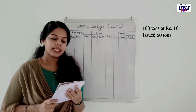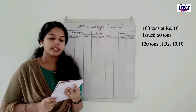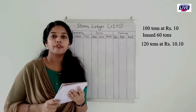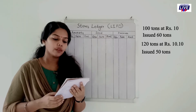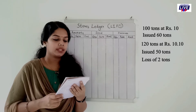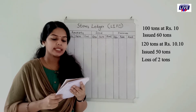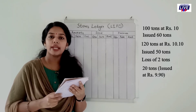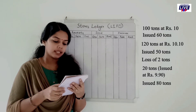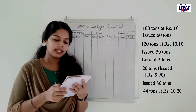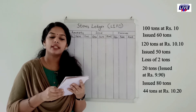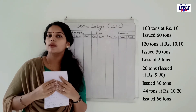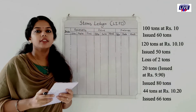The problem: First, issued 60 tons. Second, received 120 tons at the rate of 10 rupees 10 paise per ton. Third, issued 50 tons. On another day, stock verification reveals a loss of 2 tons. Fourth, received back 20 tons issued at 9 rupees 90 paise per ton. Fifth, issued 80 tons. Sixth, received 44 tons at the rate of 10 rupees 25 paise per ton. Seventh, issued 66 tons.